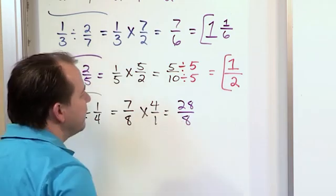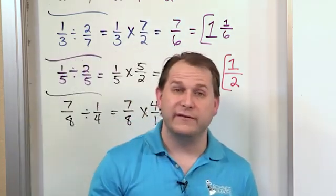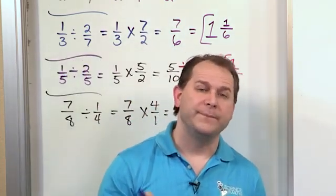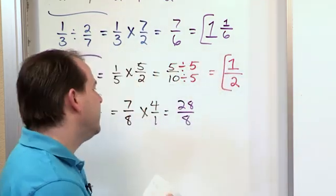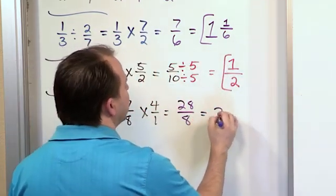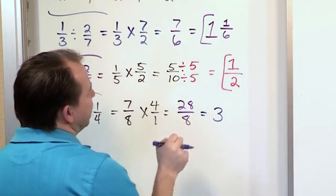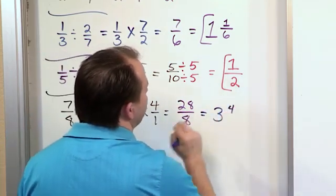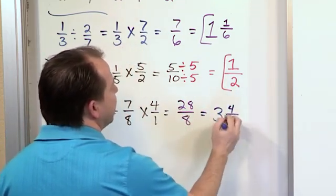So how many times will 8 go into 28? 8 times 3 is 24. And 8 times 4 is 32. That's too many. So 8 times 3 will be 24. It'll go 3 times. The difference between 28 and 24 is just a remainder of 4. And we always write it over the 8.